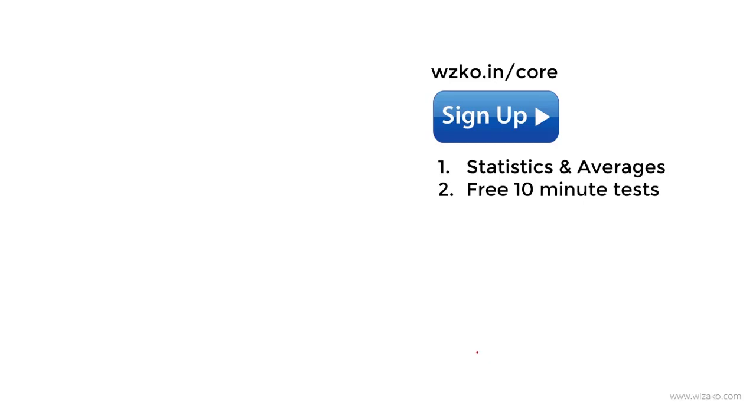Before you leave, sign up as a trial user at wzko.in/core. This is one of the most comprehensive and affordable online GMAT quant courses. It starts from absolute basics and will help you scale up to questions that take you to Q50 plus in the GMAT quant section. Try the first topic — statistics and averages — it's free. The entire topic takes about six to eight hours to complete, including checkpoint pieces and the chapter test. If you find it helpful, convert to a paid course and access the remaining topics.